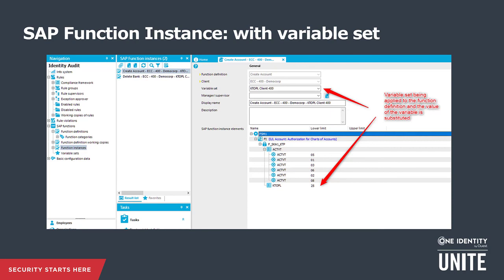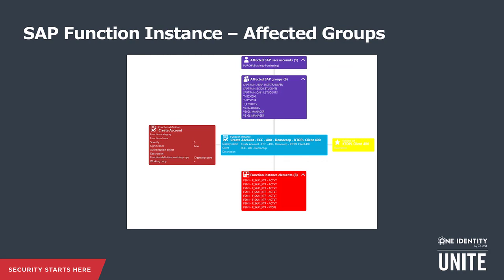For example, the KTOPL (chart of accounts) field value has been set to 25 — the value from the variable set. The function definition is a template of authorization objects; the function instance is the specific client-based instance. This way, the same function definition can be applied to different SAP clients with different values. In one SAP client the approval limit might be 10K, in another 50K — instead of two different function definitions, one is created and different variable sets are applied. Once the function instance is created, the system automatically pre-calculates the list of affected SAP roles, profiles, and user counts that already match the function instance. This pre-calculation allows for faster calculation of violations, reduction of calculation time, and faster implementation of preventive checks.